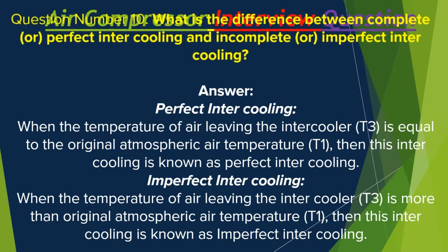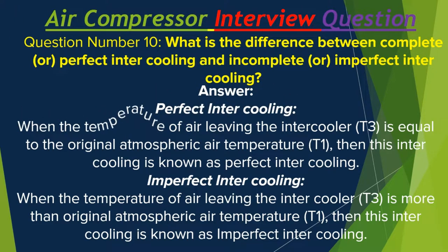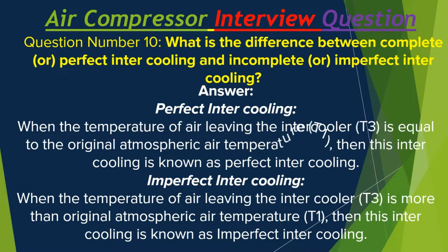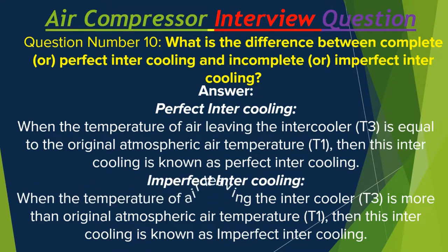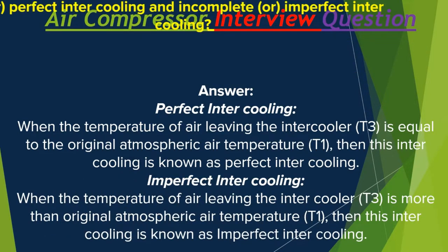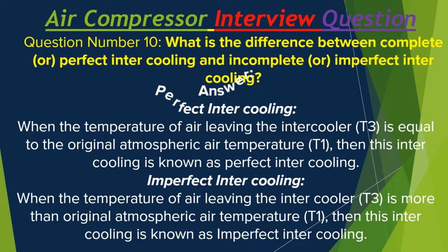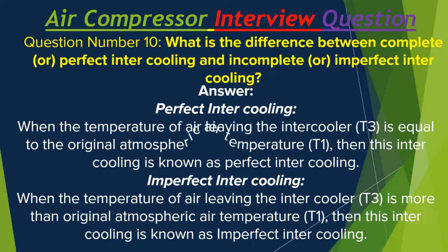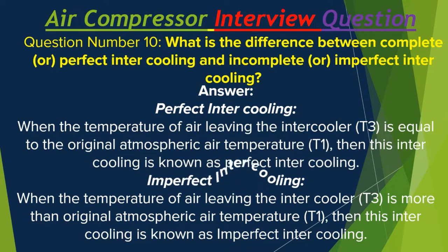Question number 10: What is the difference between complete or perfect intercooling and incomplete or imperfect intercooling? When the temperature of air leaving the intercooler, T3, is equal to the original atmospheric air temperature, T1, then this intercooling is known as perfect intercooling. Imperfect intercooling: when T3 is more than the original atmospheric air temperature T1, then this intercooling is known as imperfect intercooling.